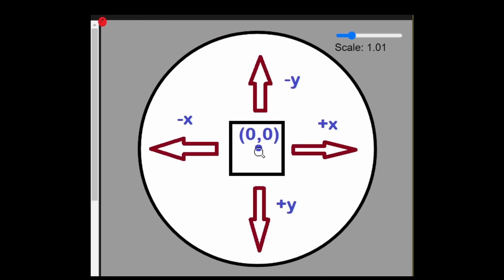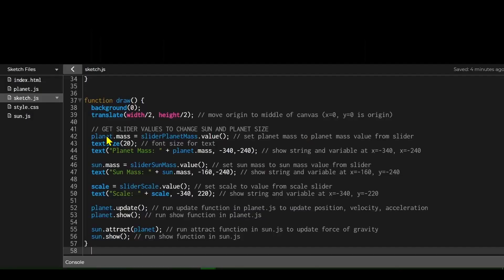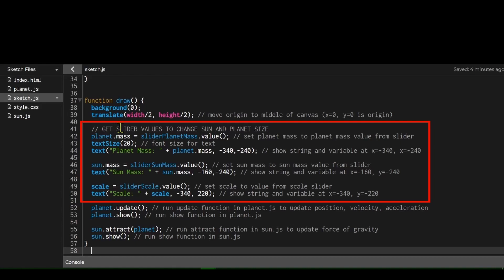After translating, y is still positive going down and x is still positive going right, but now x is negative going left from the origin, and y is negative going up. So x and y can both be negative and you'll still be on the canvas.